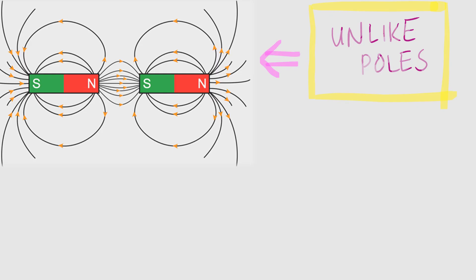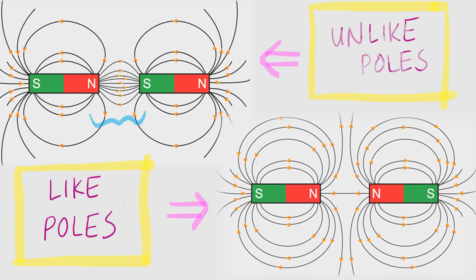When two unlike poles are brought together, the magnetic field lines join together and become denser between the poles, and they will attract each other. However, when two north poles or two south poles approach together, the magnetic field lines repel each other and they will experience a repulsive force. This X is actually called the neutral point, where the magnetic field is zero because the field lines coincide and cancel each other.